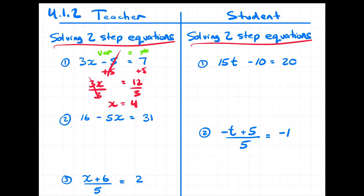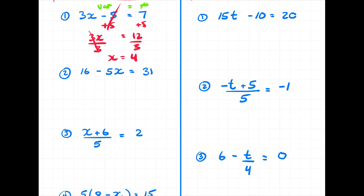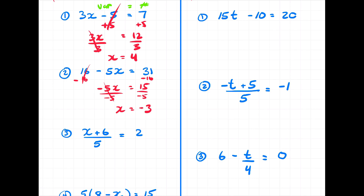Question number two: 16 minus 5x equals 31. I subtract 16 from both sides, giving me negative 5x equals 15. I divide both sides by negative 5, and I end up with x equals negative 3.